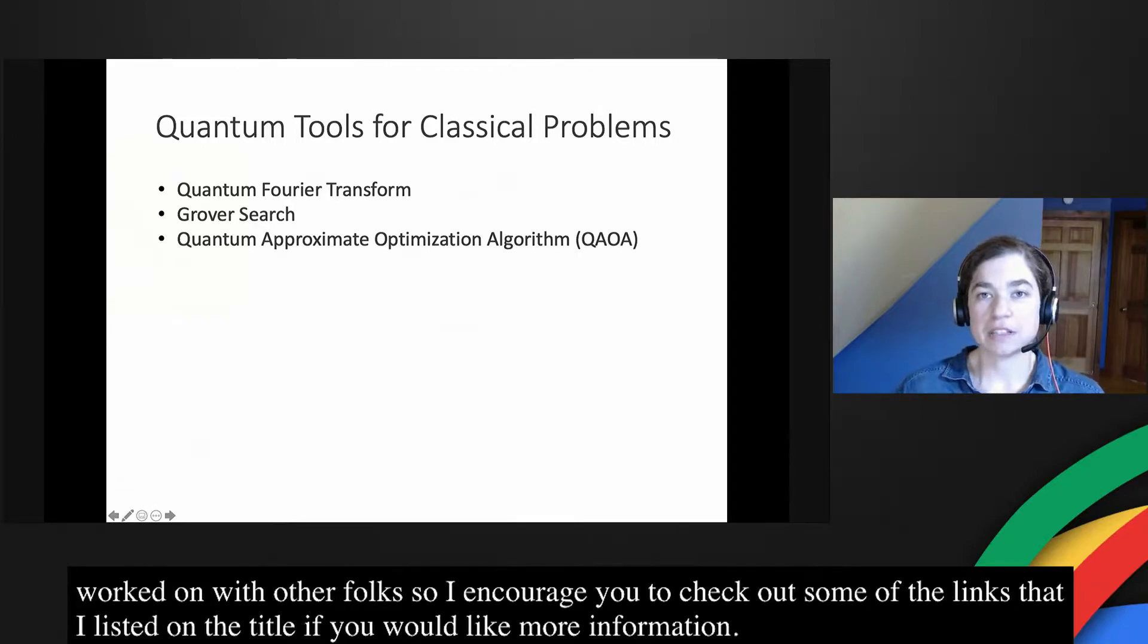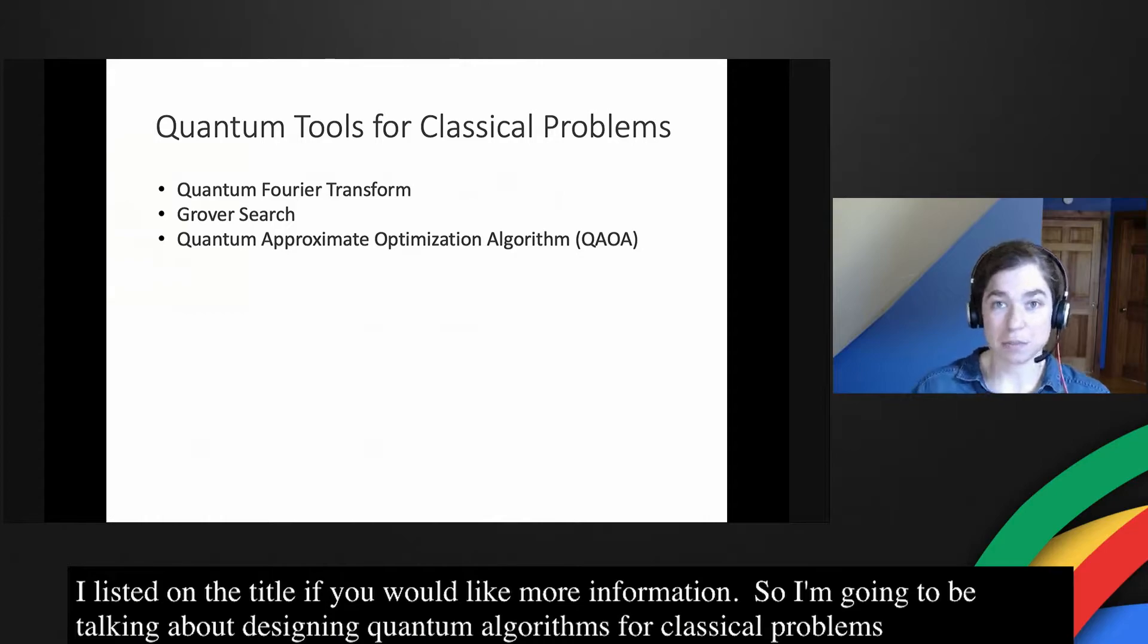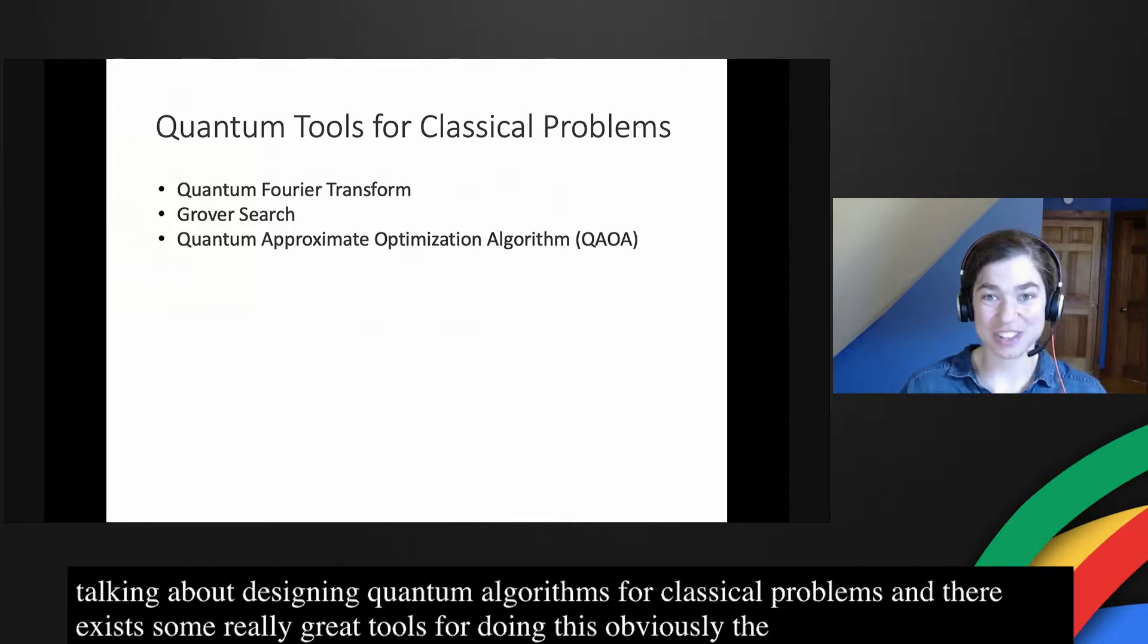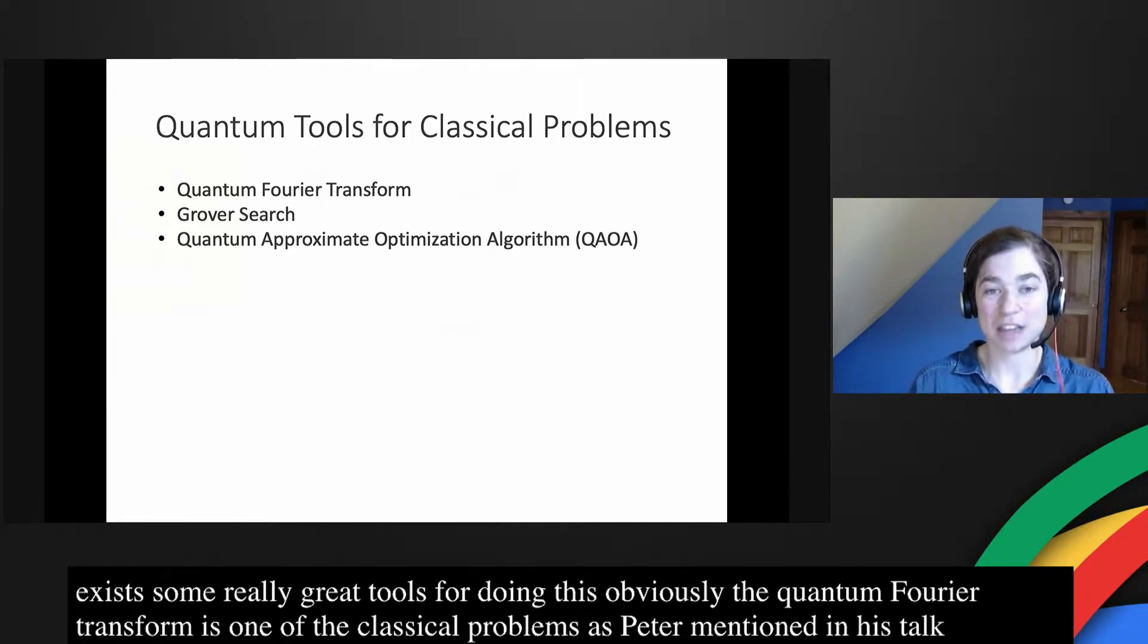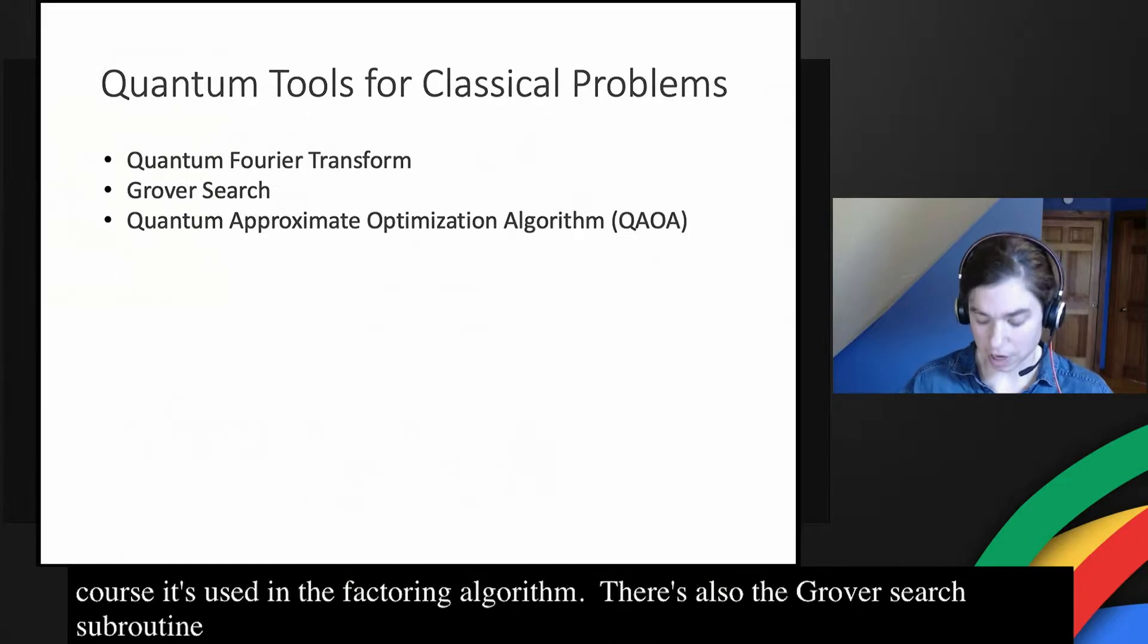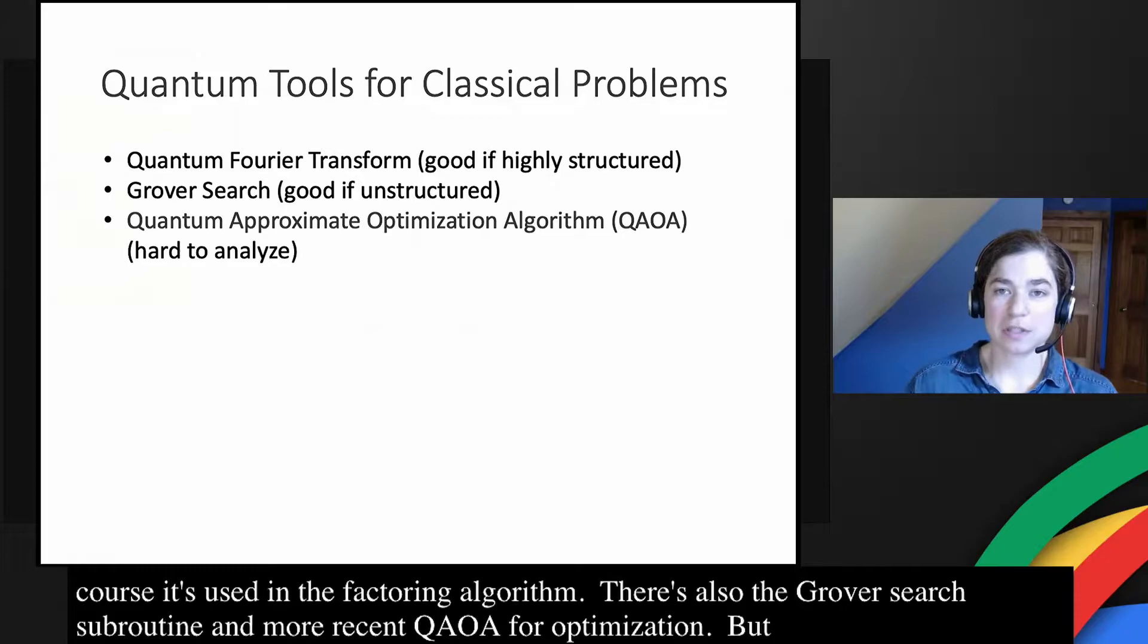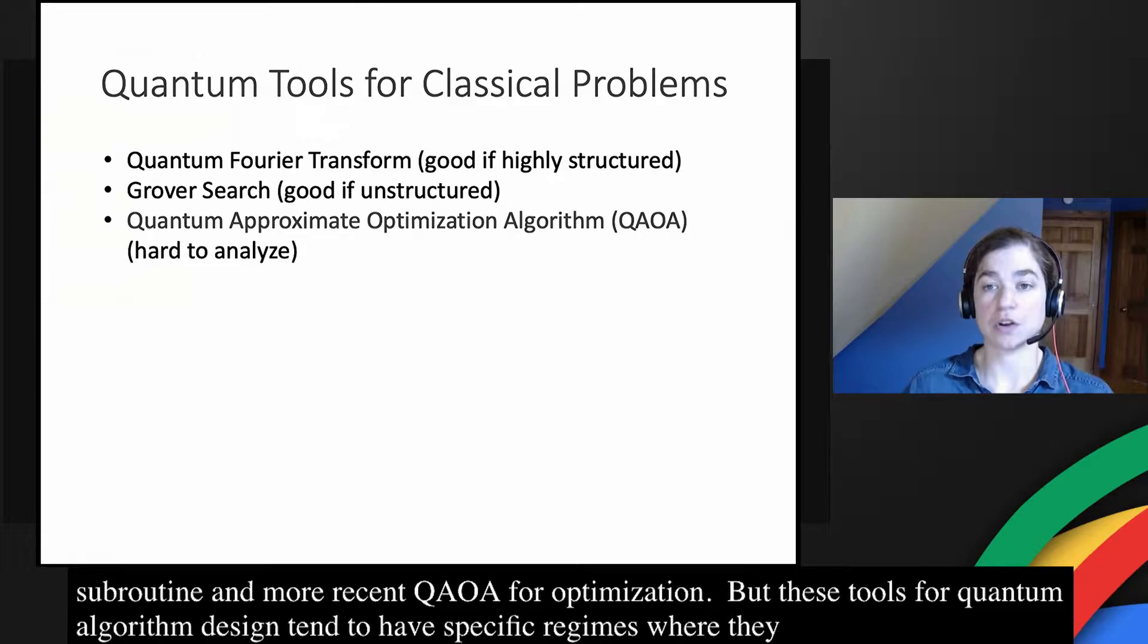I'm going to be talking about designing quantum algorithms for classical problems, and there already exists some really great tools for doing this. Obviously the quantum Fourier transform is one of the workhorses of quantum algorithms for classical problems, as Peter mentioned in his talk, and of course it's used in the factoring algorithm. There's also the Grover search subroutine and more recent algorithms such as QAOA for optimization. But these tools for quantum algorithm design tend to have specific regimes where they work really well.